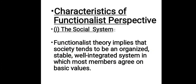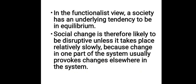The functionalist theory implies that society tends to be an organized, stable, well-integrated system in which most members agree on basic values. In the functionalist view, a society has an underlying tendency to be in equilibrium. Social change is therefore likely to be disruptive unless it takes place relatively slowly, because change in one part of the system usually provokes changes elsewhere in the system.